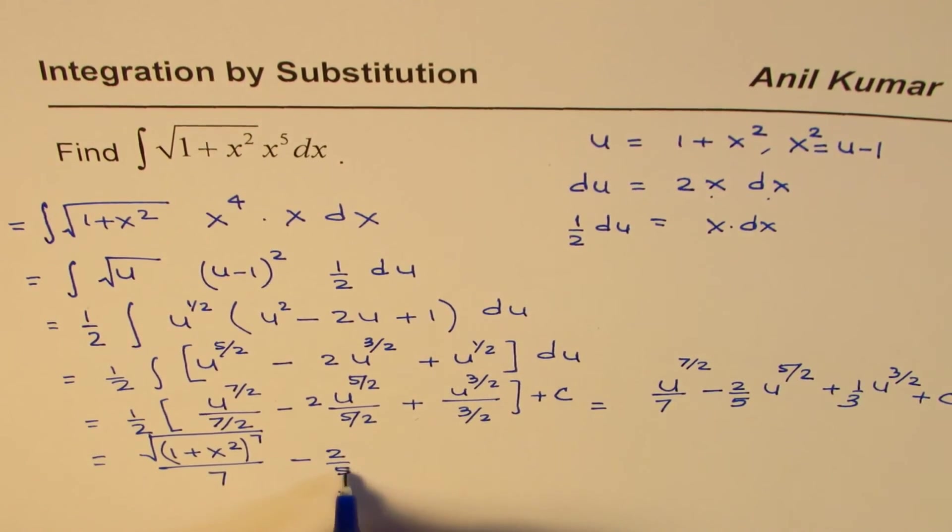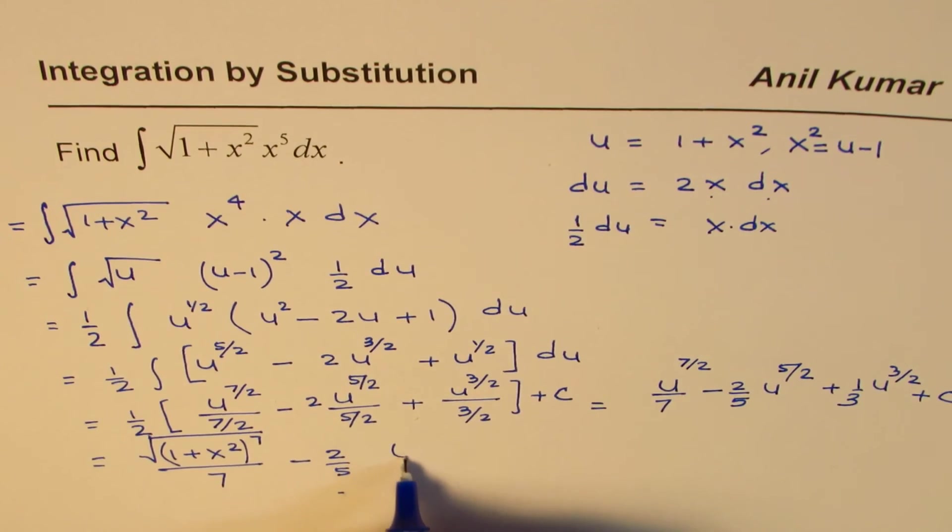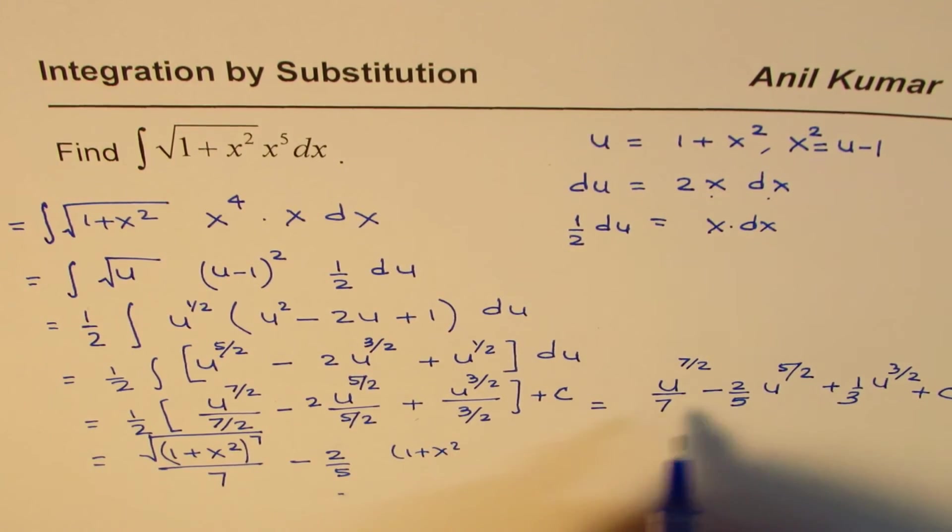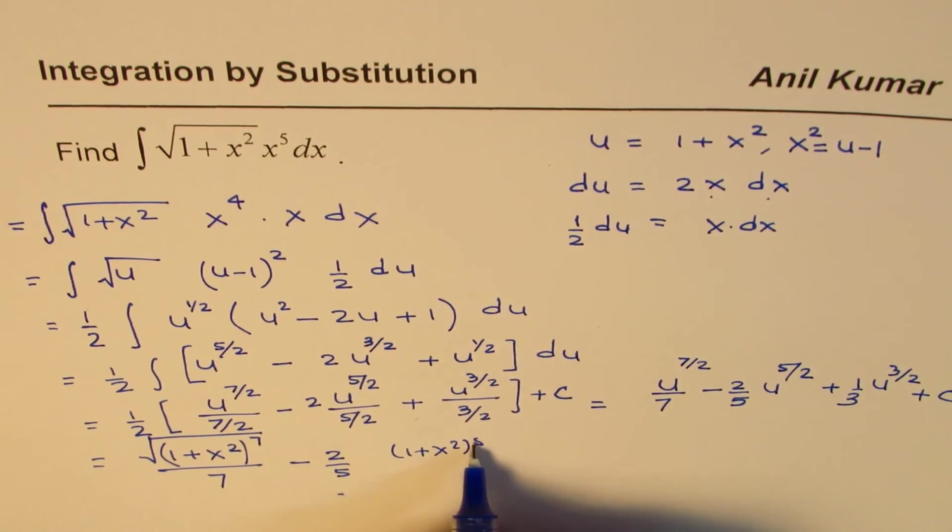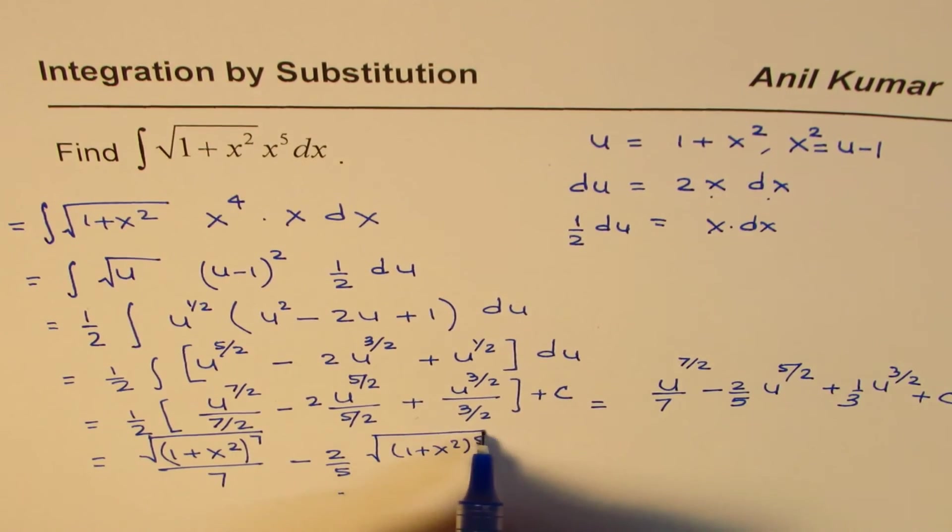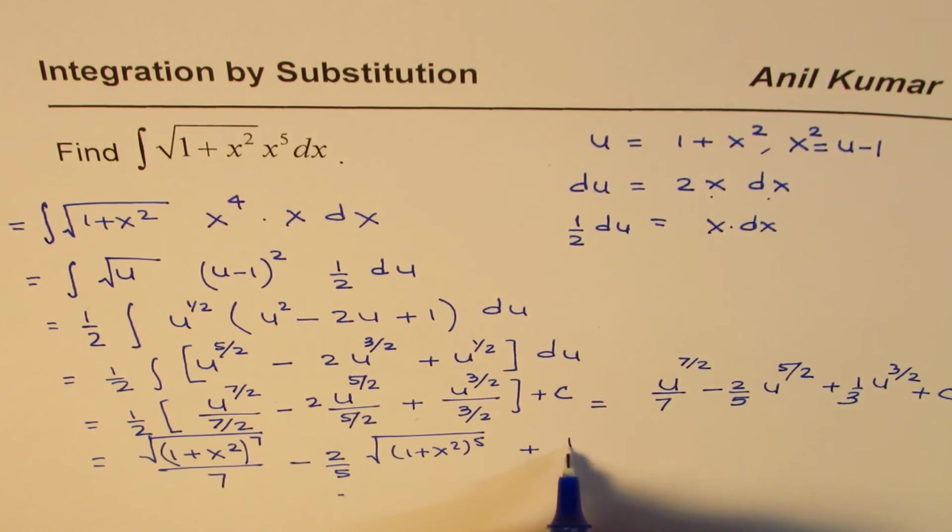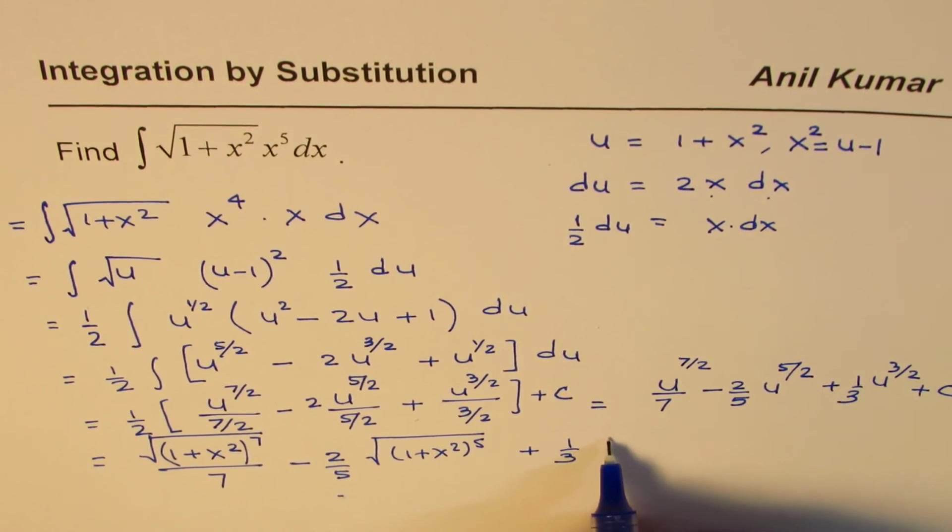Minus 2/5, u is 1 plus x squared to the power of 5 square root.